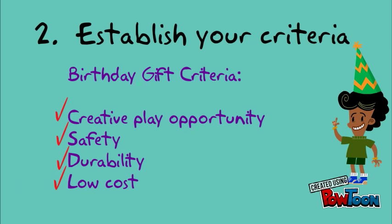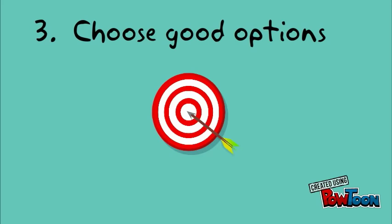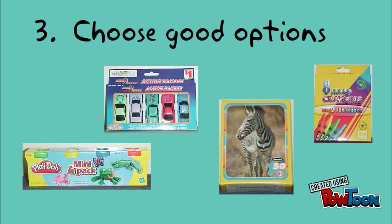The third step is to choose good options — options that meet your criteria. Joey identified several acceptable options for the birthday gift.